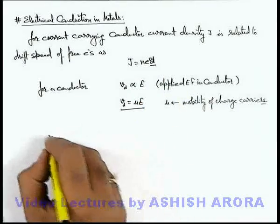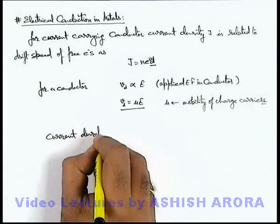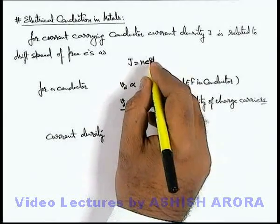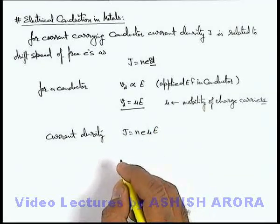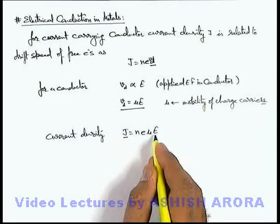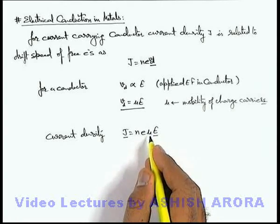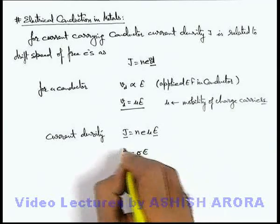If we substitute it here, then current density can be directly written as J equals ne times μE. So we can write that current density is directly proportional to the electric field because these three parameters are constant, and this we can write as σE.